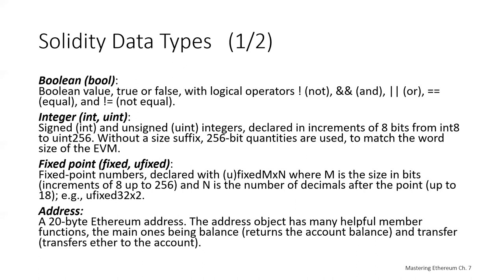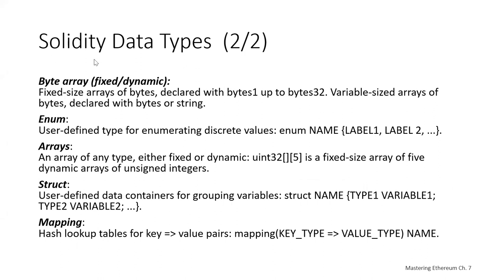Fixed point numbers — floating point numbers — are available, and you can specify the number of decimals after the point. There's a data type that actually represents an Ethereum address, with various functions associated with it like getting the balance on that address and a transfer function to transfer ETH to that address. There's a byte array to store arrays of bytes, an enumeration to enumerate your own discrete values, and you can create arrays of either fixed size or dynamic size. Keep in mind that a fixed-sized array lets you predict the gas cost, whereas a dynamic array could cause you to run out of gas.